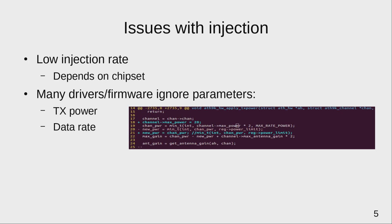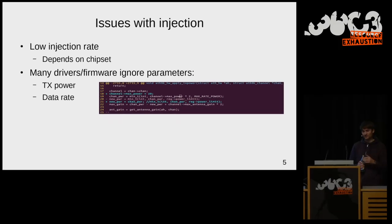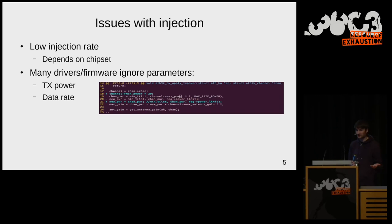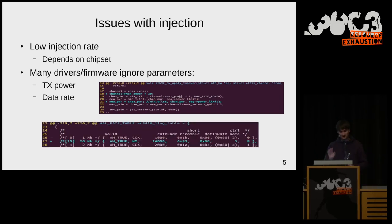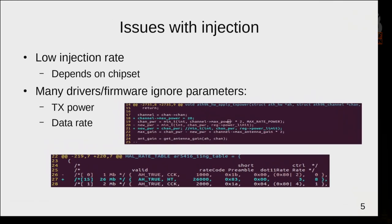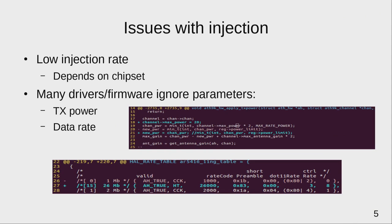Even more importantly, some devices ignored data rate requests — I'd request 54 Mbps but the driver always sent at 1 Mbps, which isn't enough for video. Luckily, one specific Wi-Fi dongle has open source firmware. You can download, compile, and flash it onto the card. To control the data rate it was just a one-line change in the firmware, allowing me to specify exactly the transmission parameters I needed.